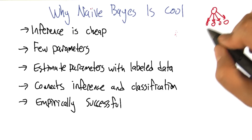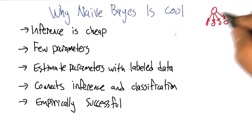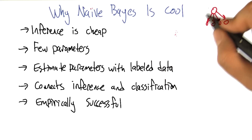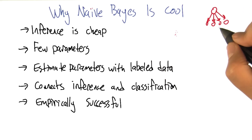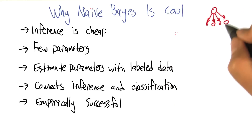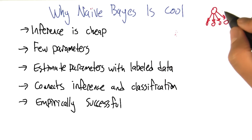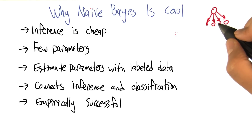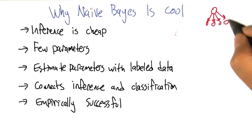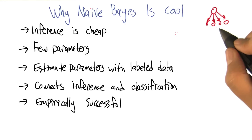The number of parameters that you need to write down, even if you have a very large number of variables, is not exponential in the number of variables — it's just linear. There are two probabilities for each of the attributes and one probability for the class.